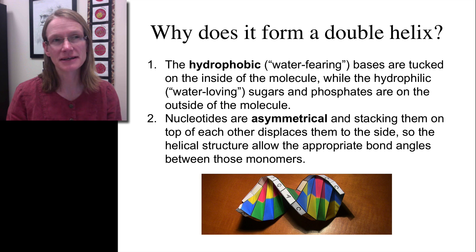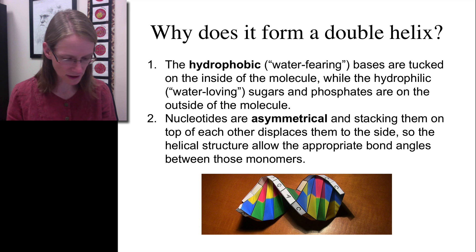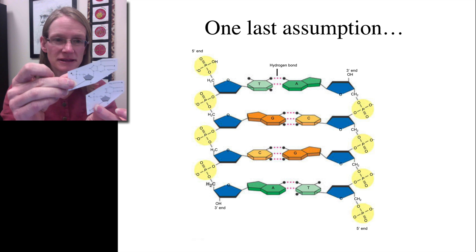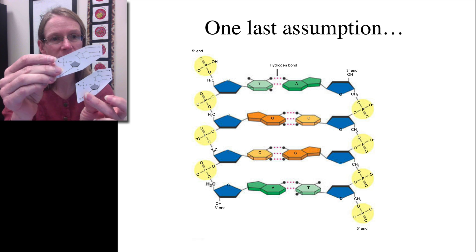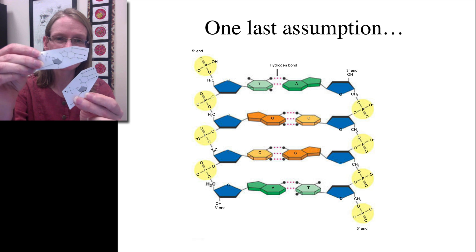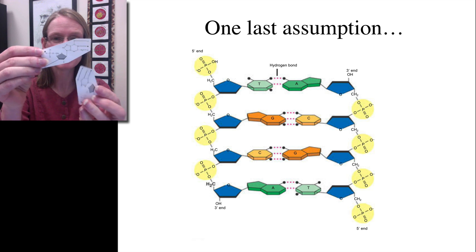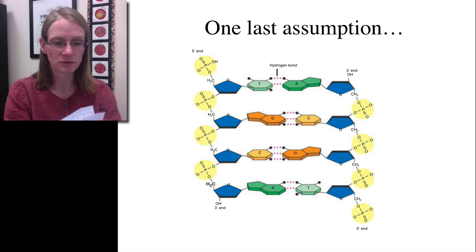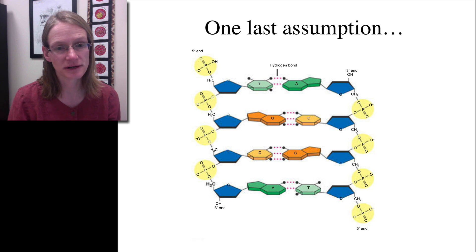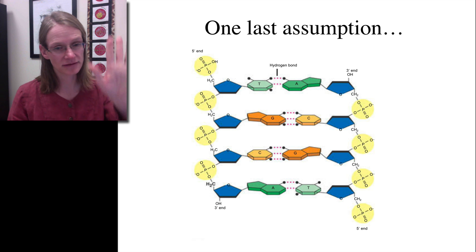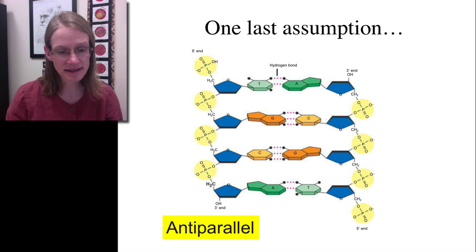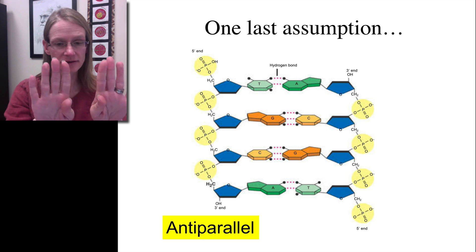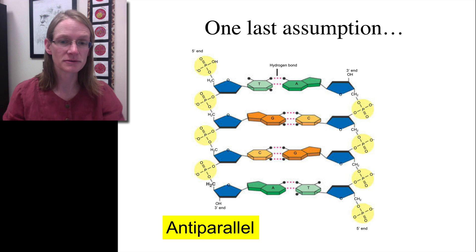The last assumption we made was thinking about how these pieces fit together. We have these two different monomers and when we try to put them together, we find that they have all these different triangles, making it very difficult without turning one of them upside down. If we turn one upside down, they actually match really well. You can see in this picture that one molecule goes one way and the other is turned upside down — this is what we refer to as anti-parallel. They're parallel and lined up side by side, but one goes one direction and the other goes the opposite direction.